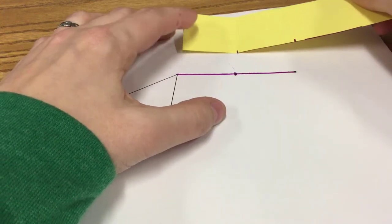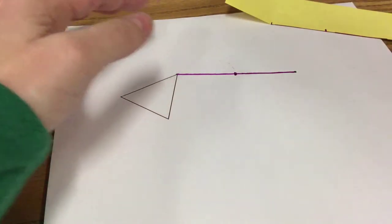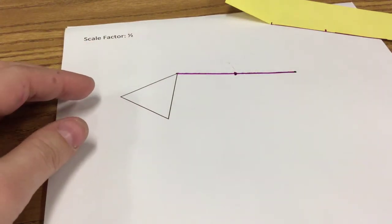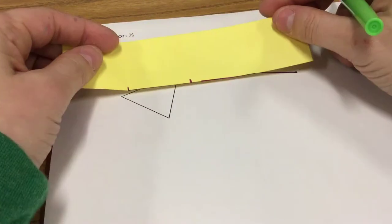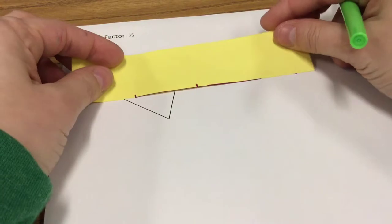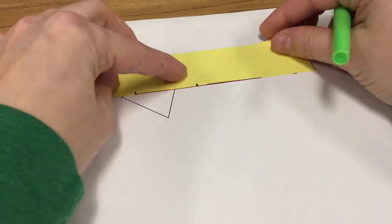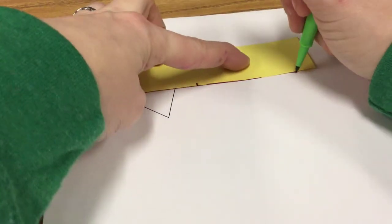We will repeat this process for the other two vertices. Make sure you switch colors for each vertex to keep things organized. Line your paper up. Draw a line from the center of dilation to the vertex.